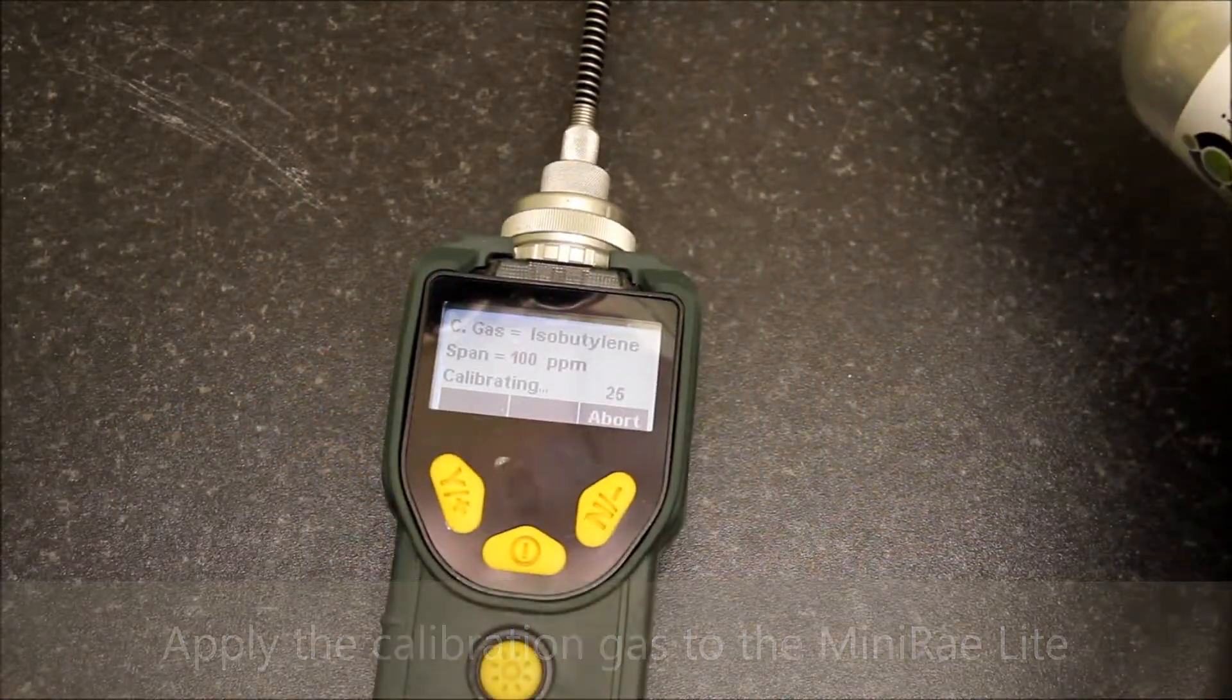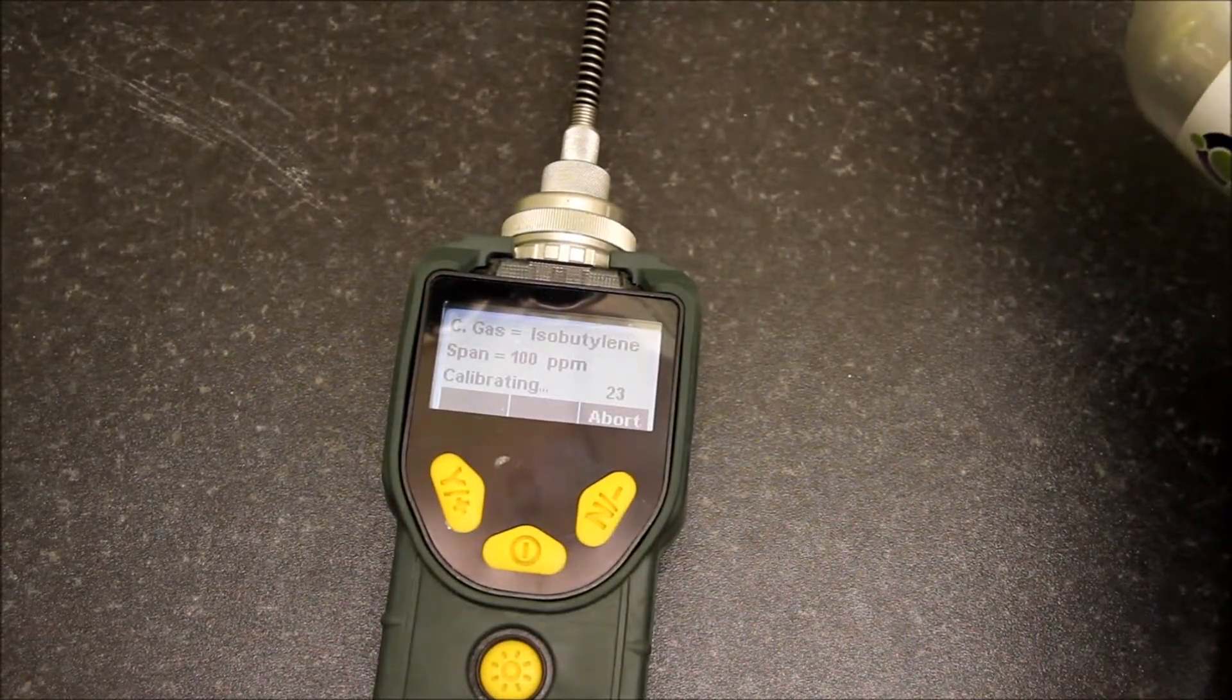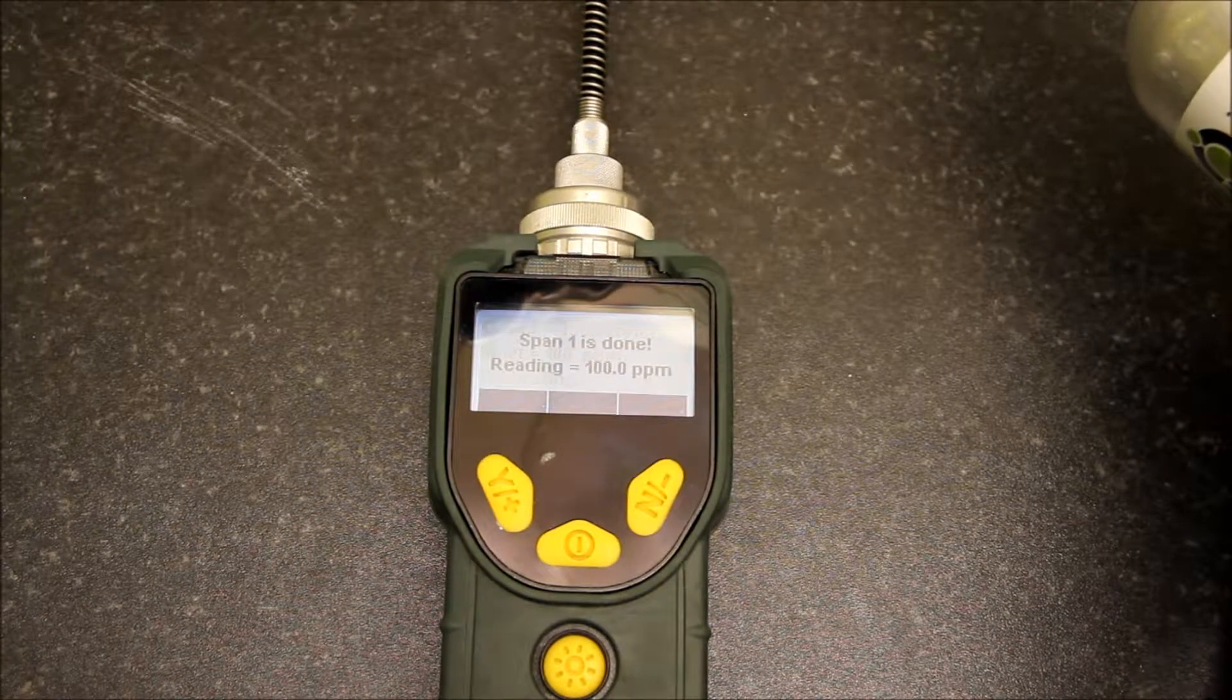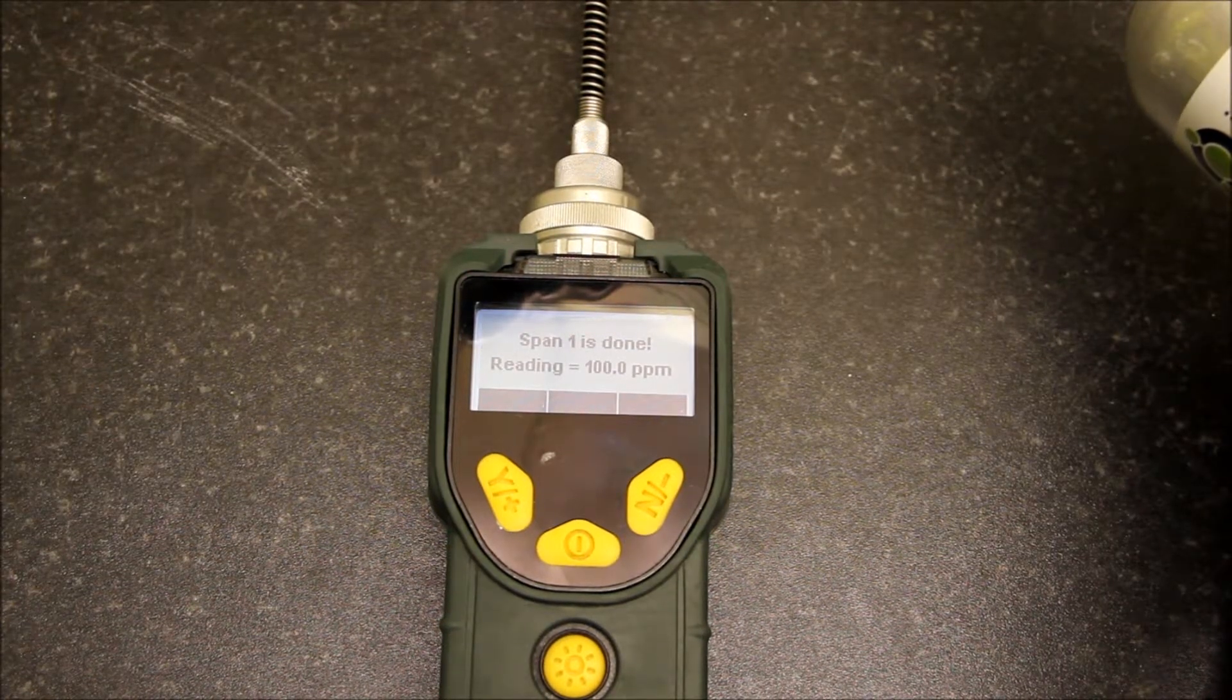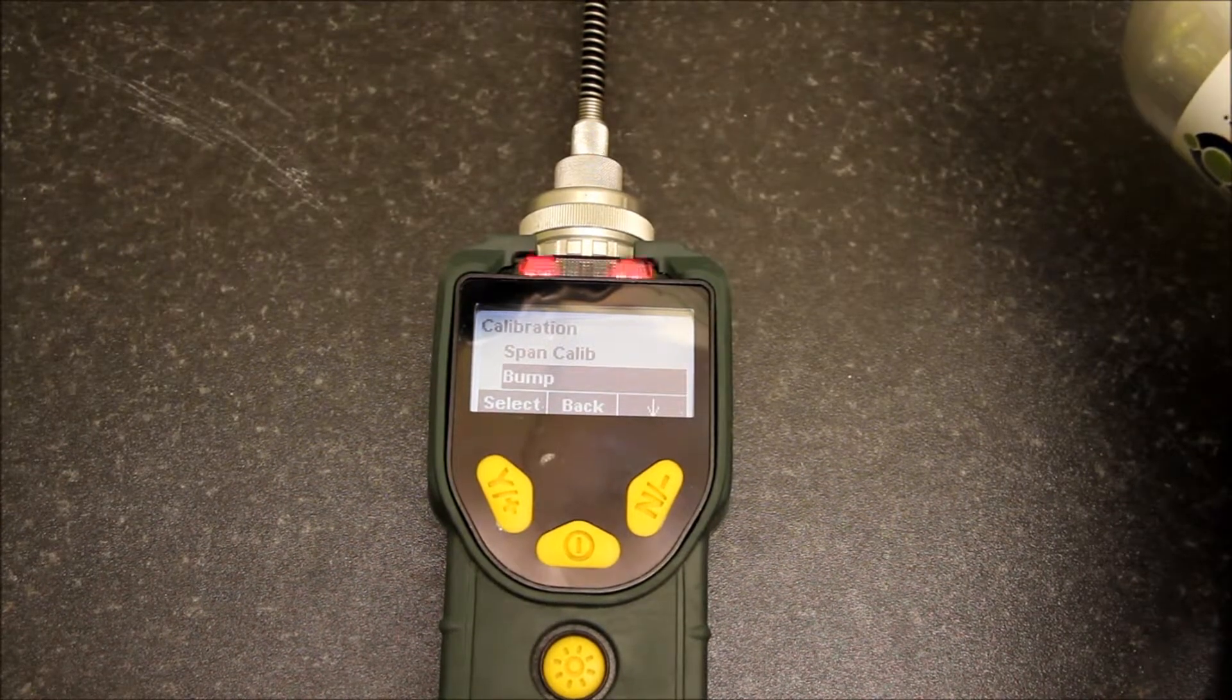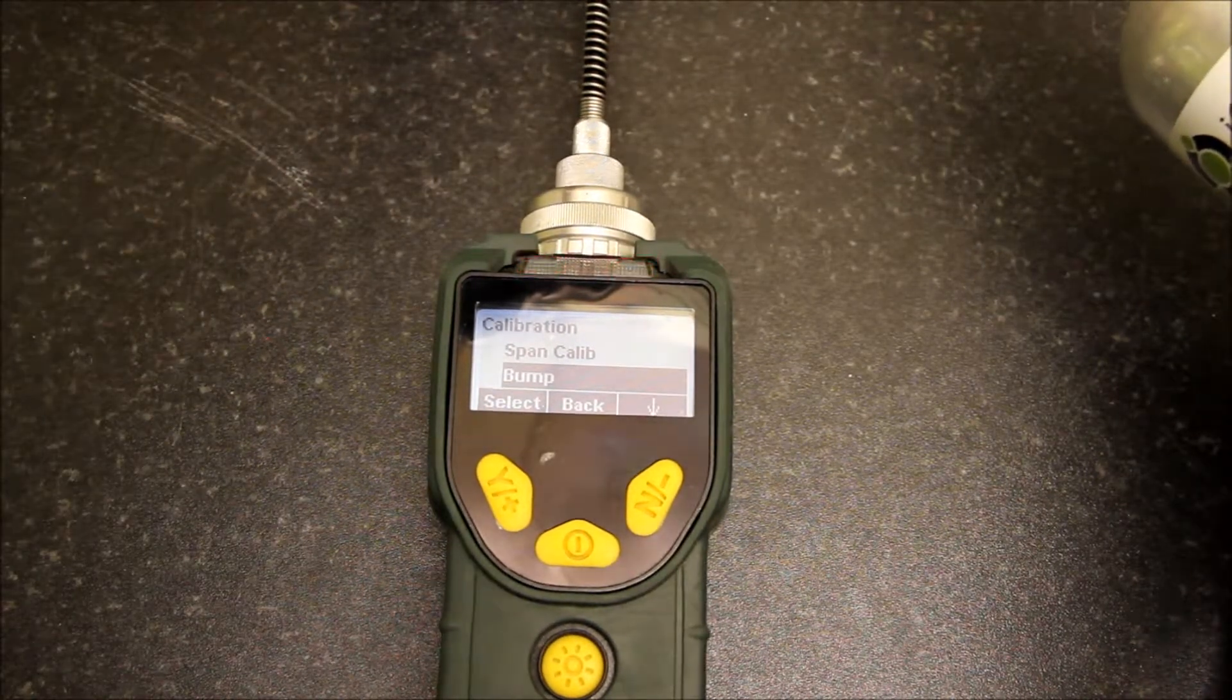You'll see the unit has started to auto calibrate and it will now take 30 seconds to calibrate. We're now entering the last few seconds of the calibration phase. It will now display the live value, which is 100 ppm spot on. We now remove the gas.